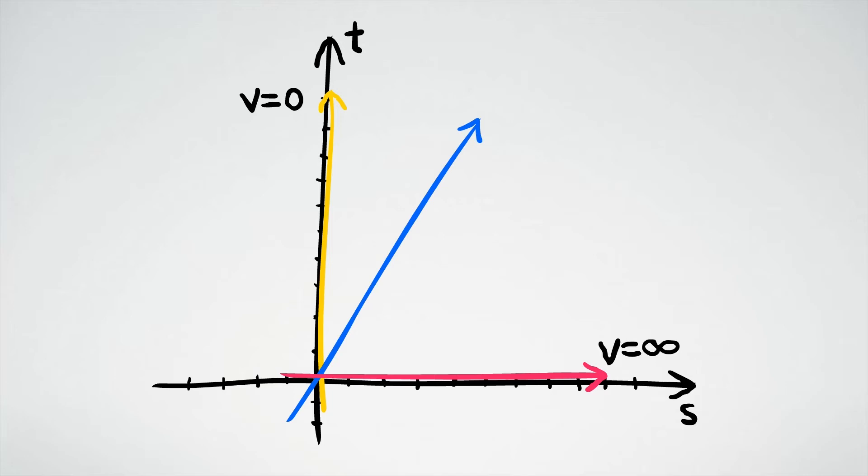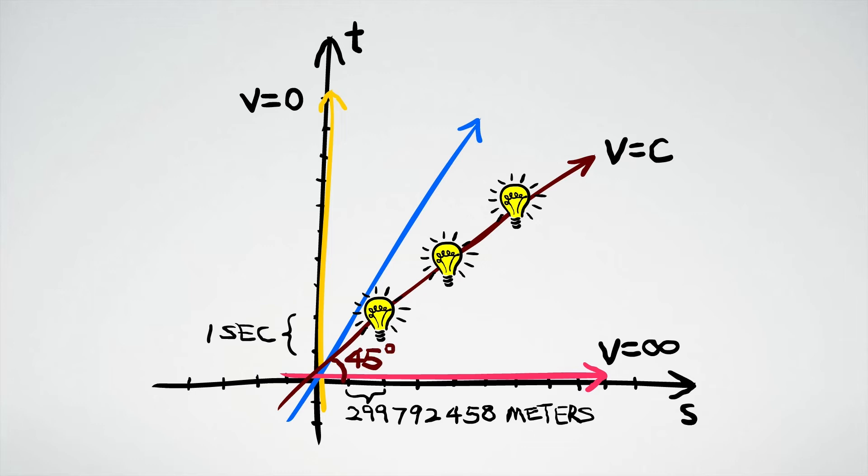If we scale the space axis to give each unit a length of 299,792,458 meters, which is the distance that light travels in a second, then the world line of light will always have a 45 degree slope.